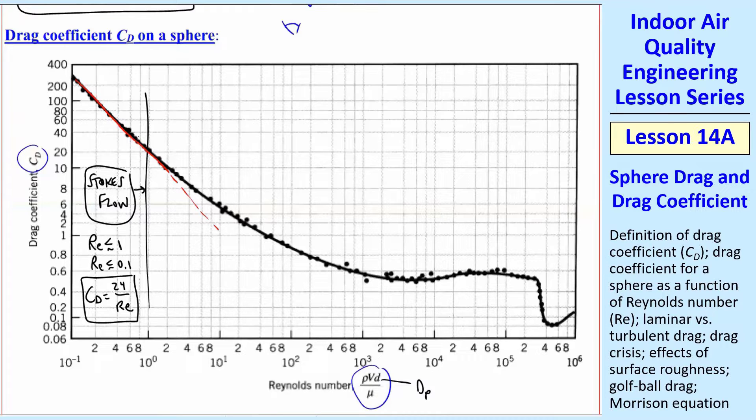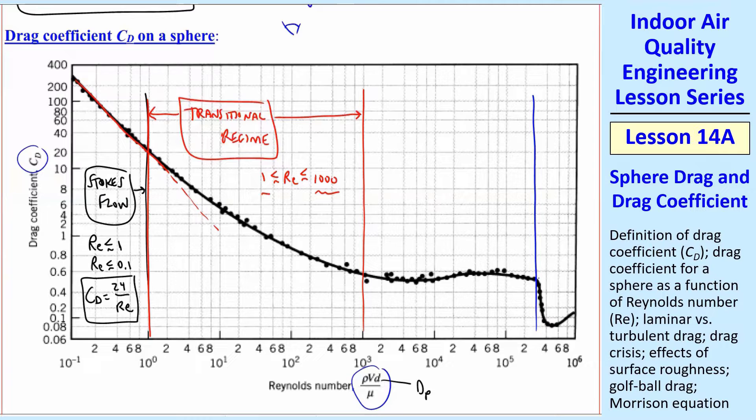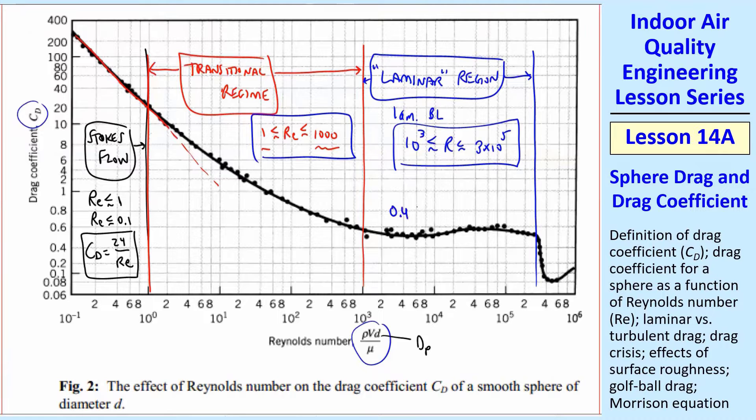But you see it starts to veer off like that if you plot a straight line. That's good for very small Reynolds numbers. And then you have between about 1 and 1,000, we call this the transitional regime. I don't really like that name because it seems to imply transition between laminar and turbulent. It's really transitional between the Stokes flow and what they call a laminar separation region. There's no clear distinction between these various Reynolds numbers, but that's called the transitional regime.